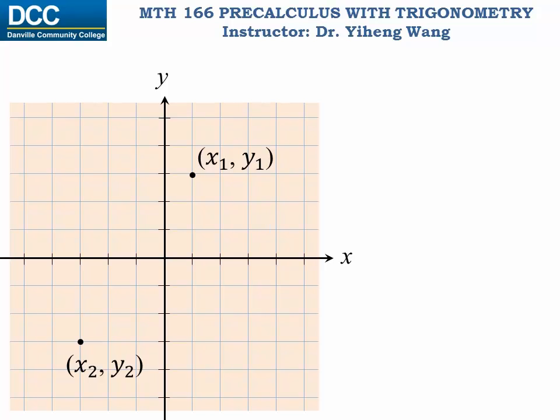So in general, if there are two arbitrary points on the Cartesian plane, with coordinates (x₁, y₁) and (x₂, y₂) respectively,